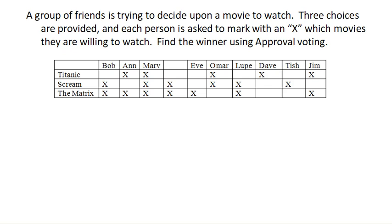Now we're going to look at a different type of voting called approval voting. This takes a totally different approach than the voting we did earlier. With approval voting, we don't cast a ranked choice vote where we rank our choices in order. Instead, each person votes for what they're okay with — in other words, what they're willing to approve.